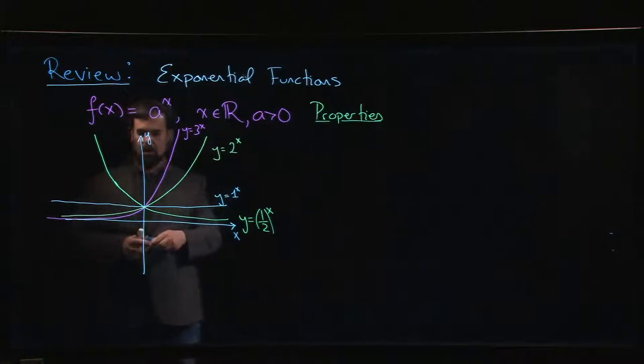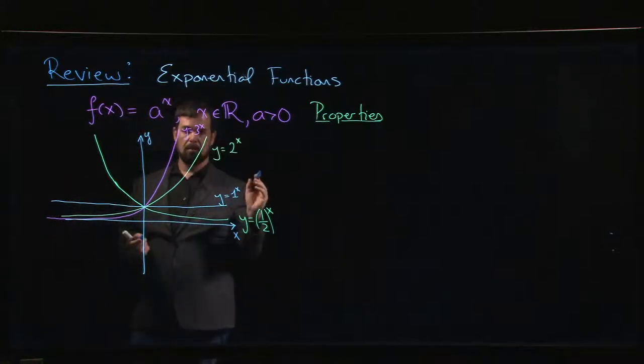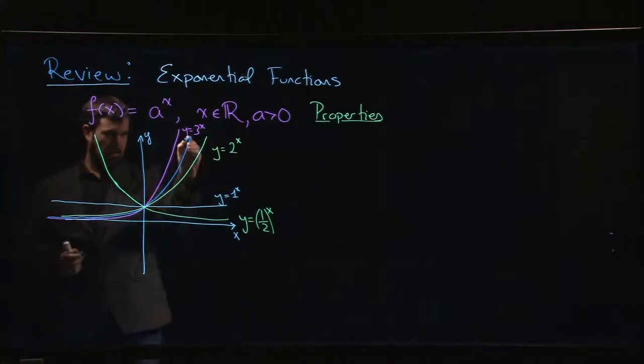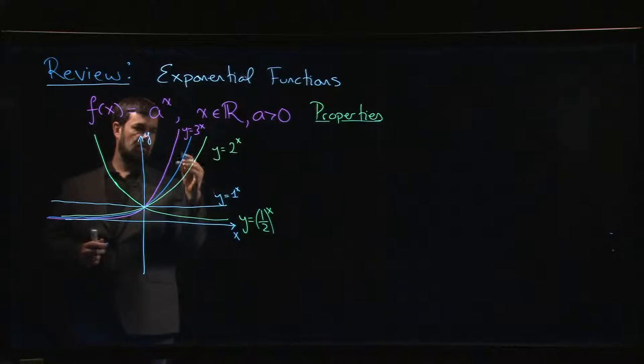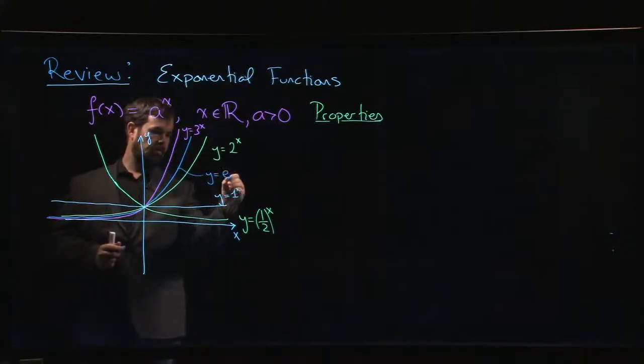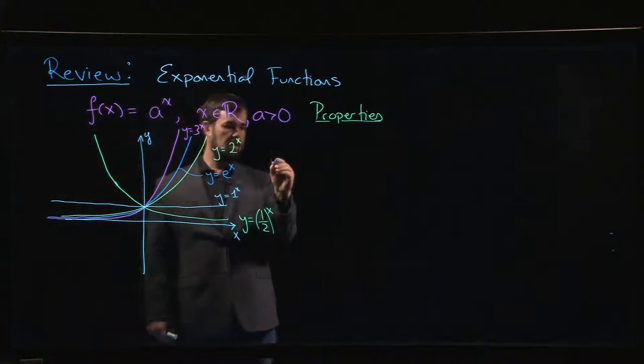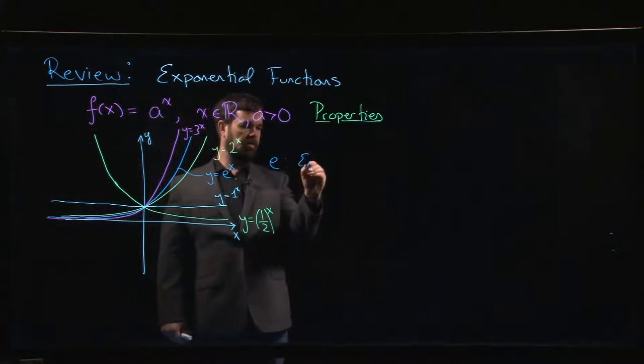One that's not pictured, which is the most common exponential function, is the natural exponential, which sits somewhere in here. Here is y equals e to the x. This e is Euler's number.